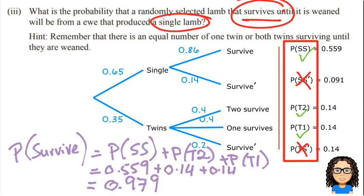Okay, so that's my first part. Now I need to go back to the question wording again. It talks about a randomly selected lamb that survives. So I've got that. That's my condition. I know that a lamb has survived.